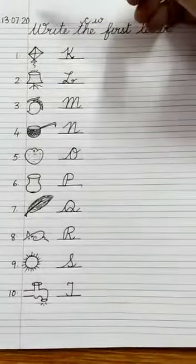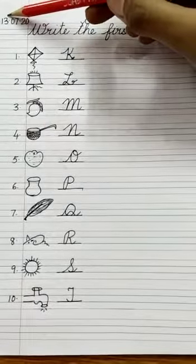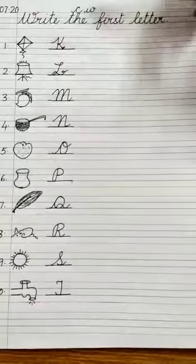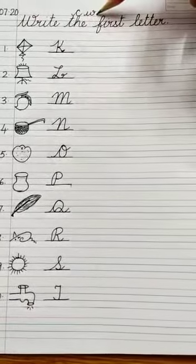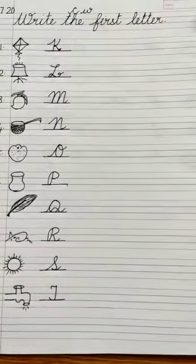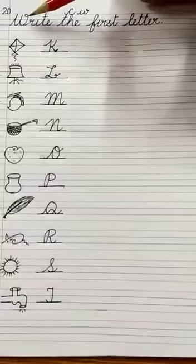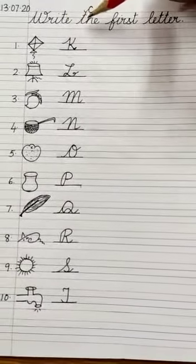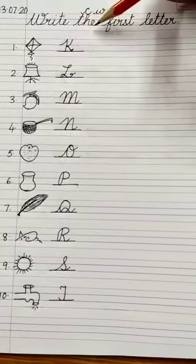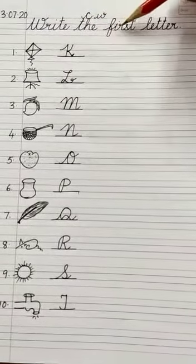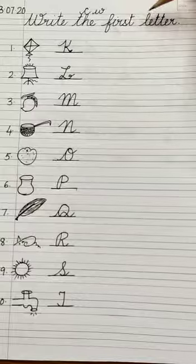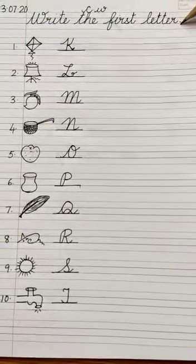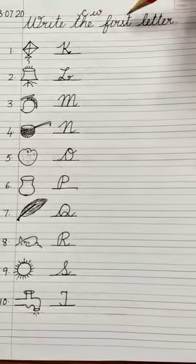First you will write the date 13.07.20, C.W. classwork, and in the first line you will write the heading: Write W-R-I-T-E, the T-H-E, first F-I-R-S-T, letter L-E-T-T-E-R. Write the first letter.